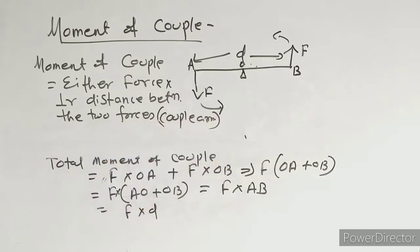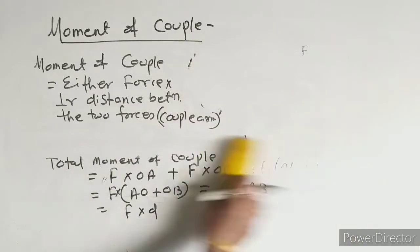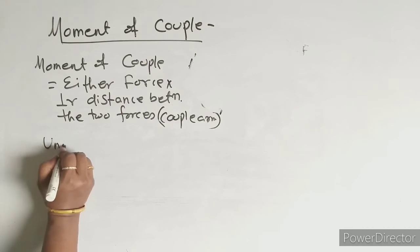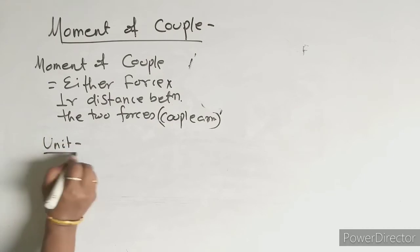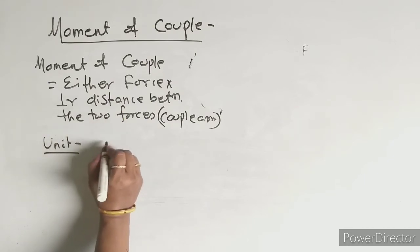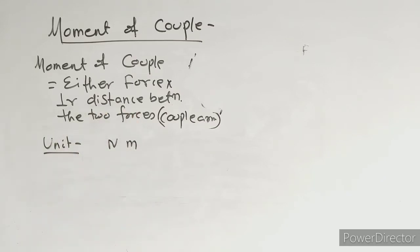This distance is also known as the couple arm. So, moment of couple equals either force multiplied by the perpendicular distance between the two forces, also called the couple arm. Its unit is Newton-meter, since force is in Newtons and distance is in meters.